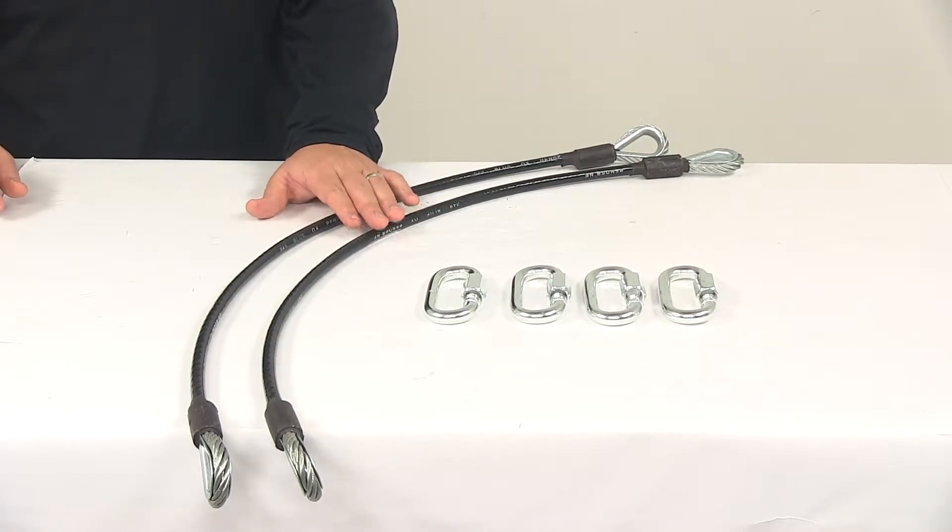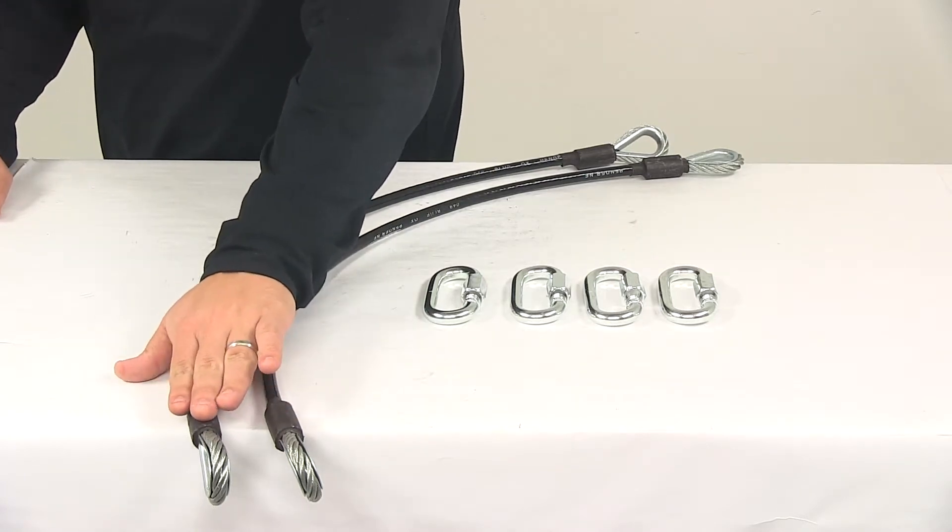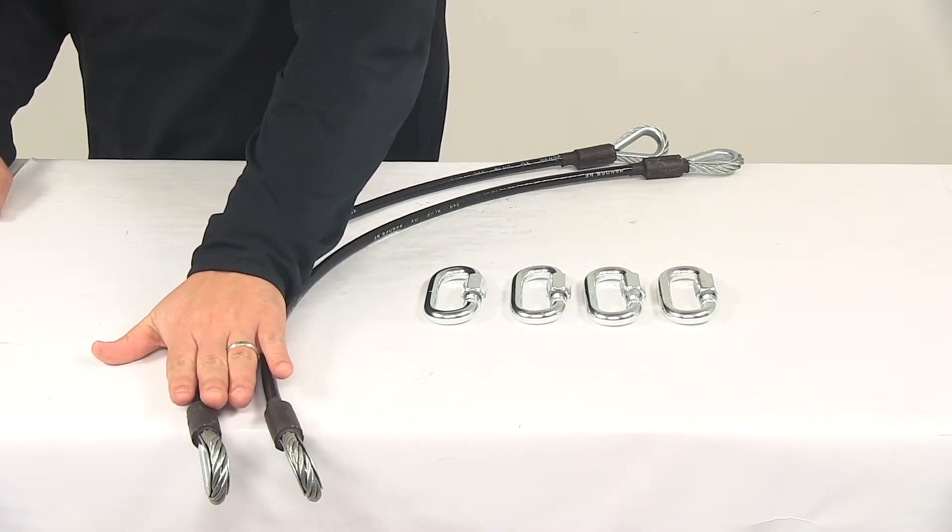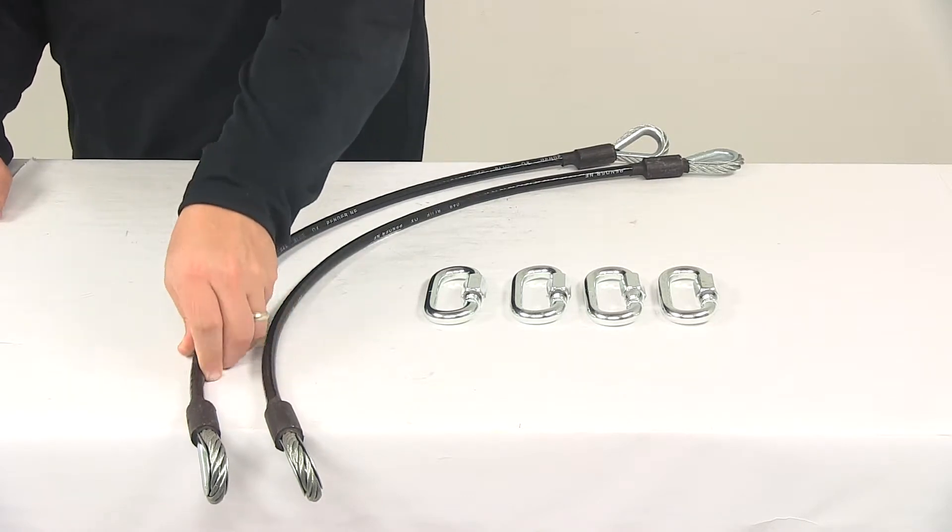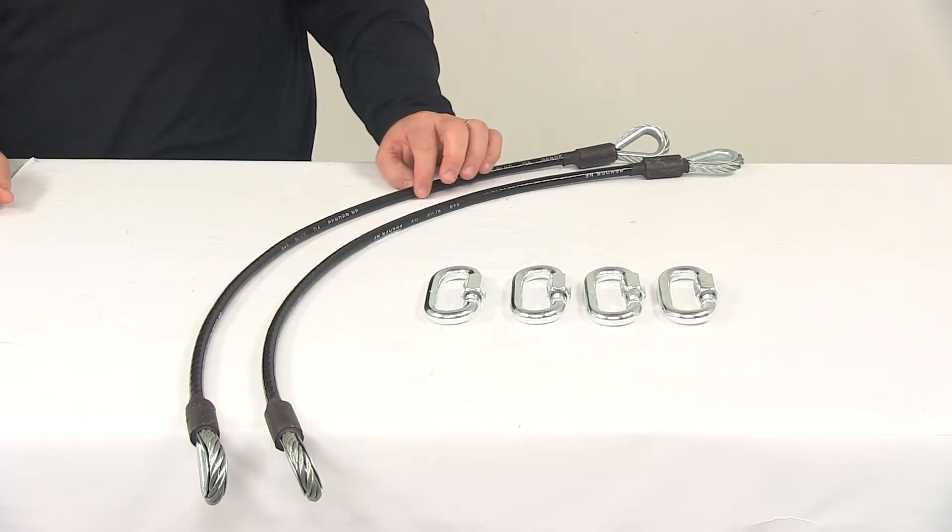They're constructed of aircraft grade steel. They're very strong and very durable. They feature a capacity of 10,000 pounds and have a really nice coating that goes over the cable so it won't scratch your tow bar system.